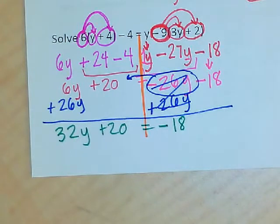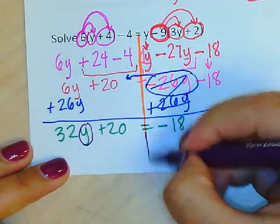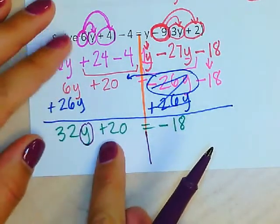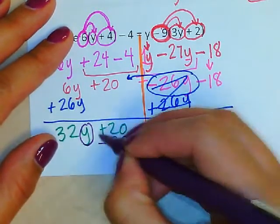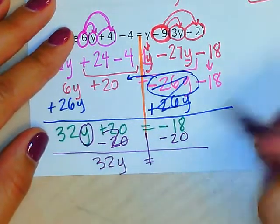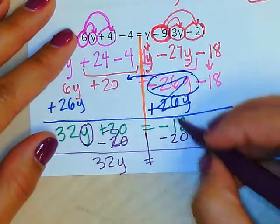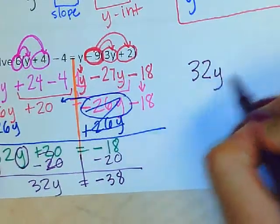From here, now I have to cancel out. Remember, we are solving for y. Y is still not alone - I need to get rid of all these things. The easiest one to get rid of is add or subtract. Plus 20 gets cancelled by the opposite, minus 20. I still have 32y over here. Over here, remember same signs - add and keep the sign. So I have negative 38. I'm going to rewrite this part because I ran out of room.